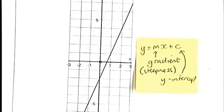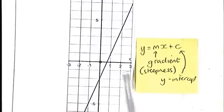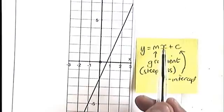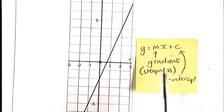So our objective is to find those two numbers, m the gradient, and c the y-intercept. Once we've worked out both of those numbers, we'll be able to put our equation into this format, y equals the gradient multiplied by x plus the y-intercept.